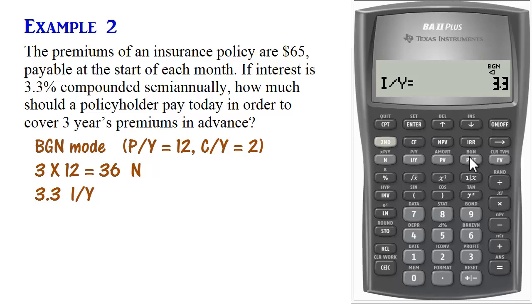The payments are $65, so we enter $65 negative because payment is being made out. Future value is going to be 0, so we do 0 future value.